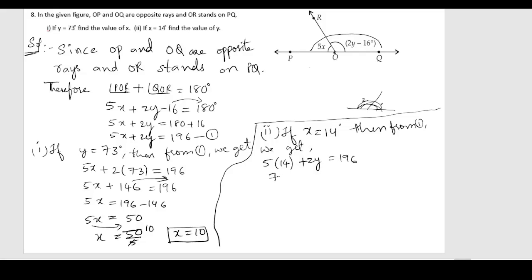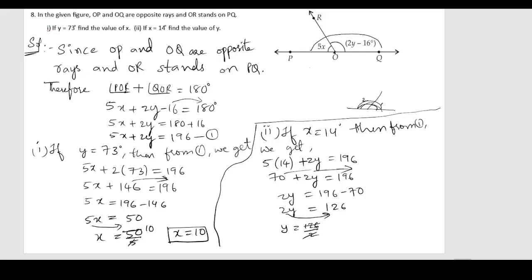5 times 14 is 70, so 70 plus 2y equals 196. Sending 70 to the other side: 2y equals 196 minus 70 equals 126. Therefore y equals 126 divided by 2, which gives y equals 63.